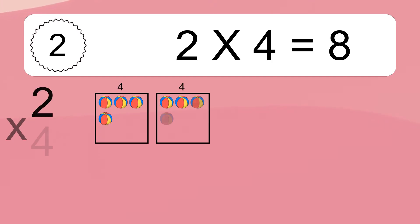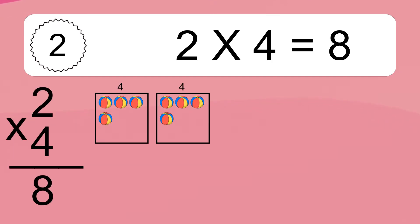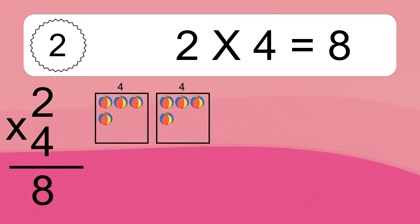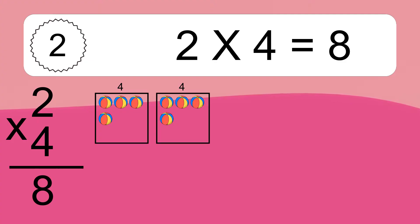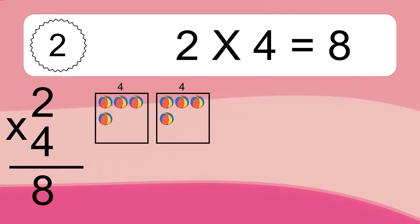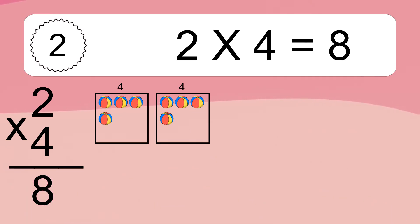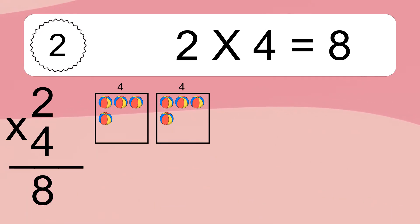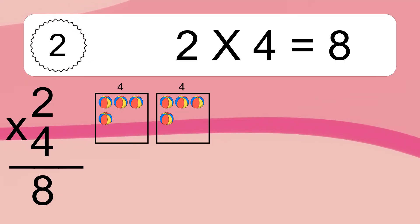2 times 4 equals 8. We have 2 boxes, and each box has 4 colorful balls inside. If you count all the balls in all the boxes together, you will have 2 times 4 balls.